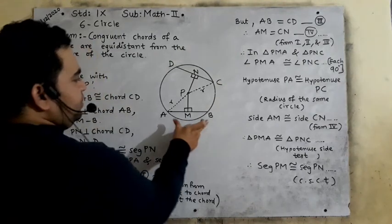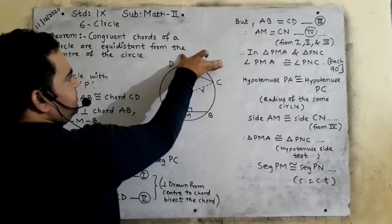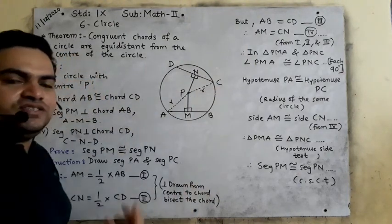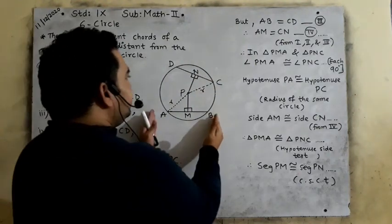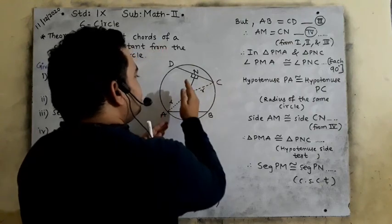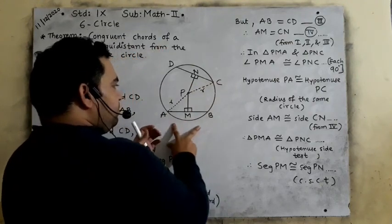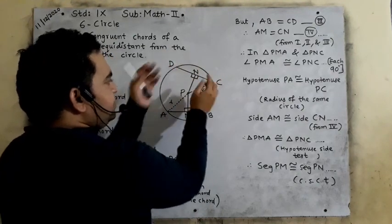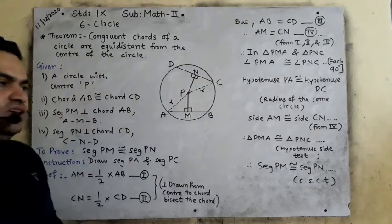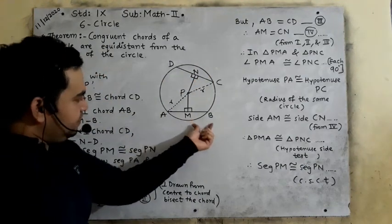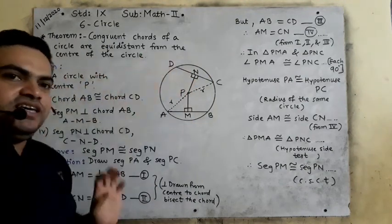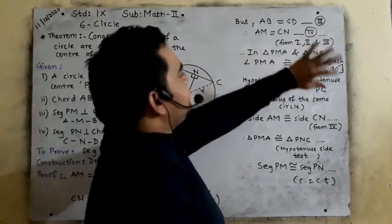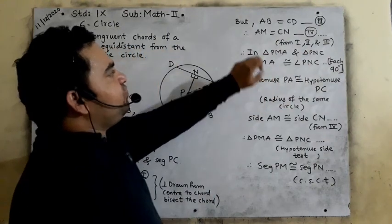But AB is equal to CD — we know this. So AM is equal to CN. AB and CD are the same length, and the perpendicular divides each into two equal parts. Whatever AM is, CN will be the same. Similarly, BM will equal DN, because CD and AB are equal.